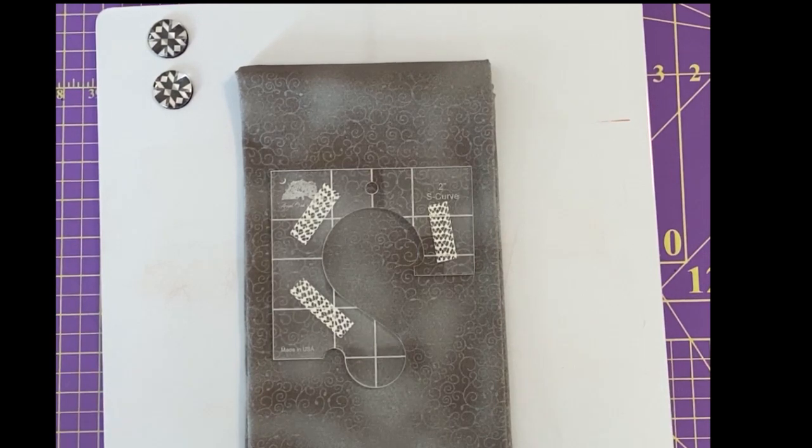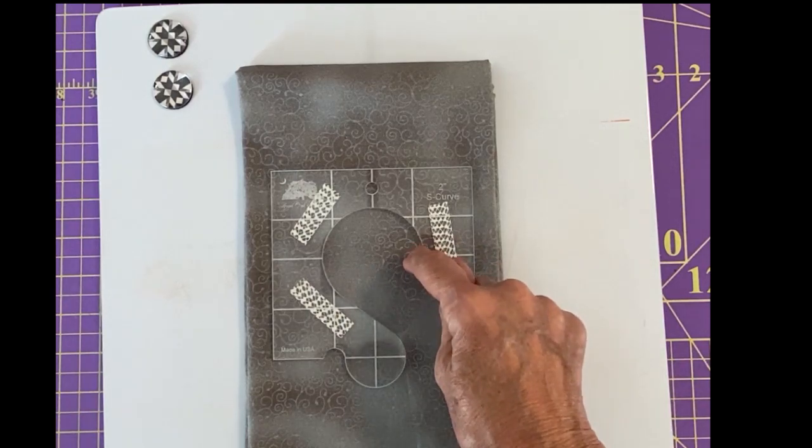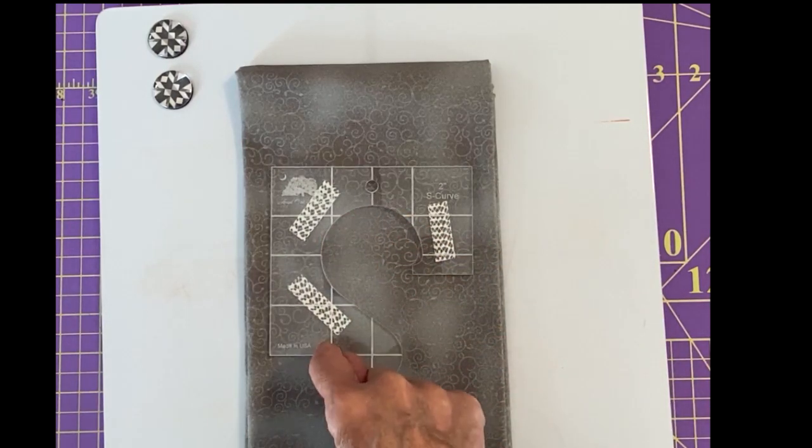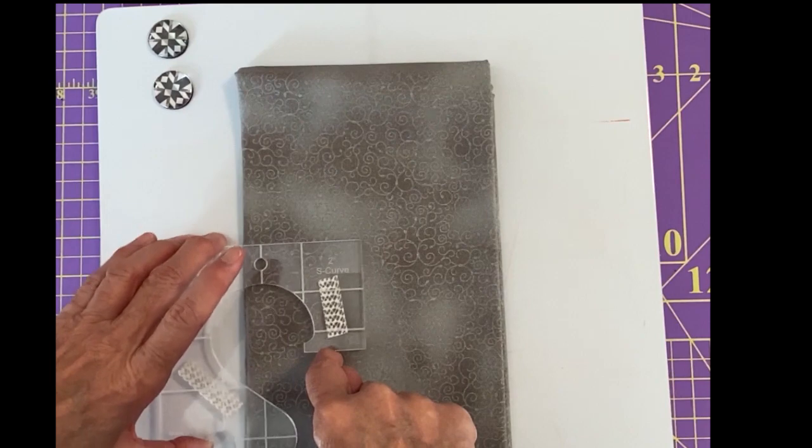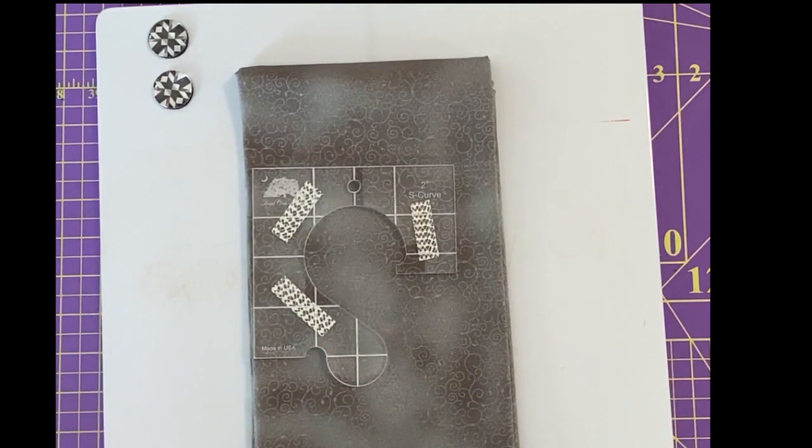This is what an S-curve ruler looks like. This is a two inch one. I'm going to be demonstrating on the one inch just so it'll fit better on my board. But I looked at that and I thought, well this is simple. You go from here and you quilt around here and you hook here and then you move this down. Well let's see what happens when we do that.